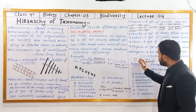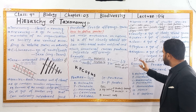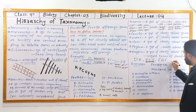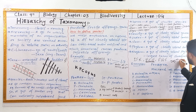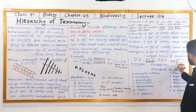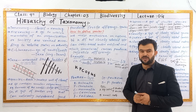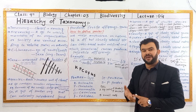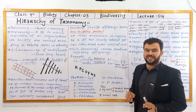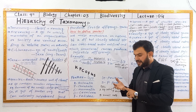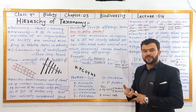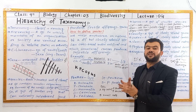There are three domains of life: domain Archaea, domain Bacteria, and domain Eukarya. Domain Eukarya includes organisms that have a cell nucleus and membrane-bounded organelles. Eukarya includes protists, fungi, plants, and animals.